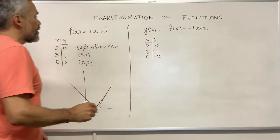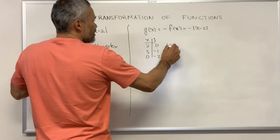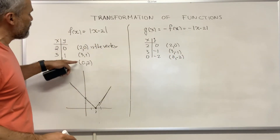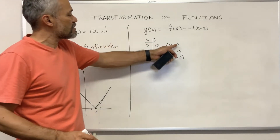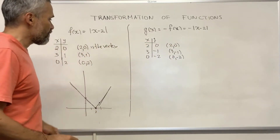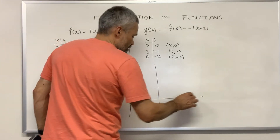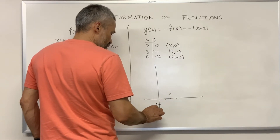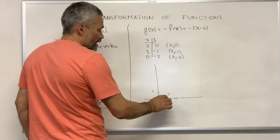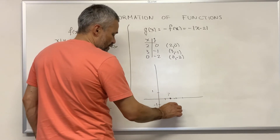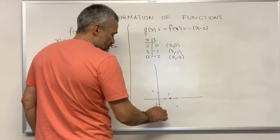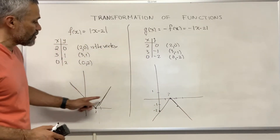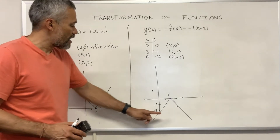When we replace 0 we get negative 2. The points we get — (2, 0), (3, -1), and (0, -2) — are essentially the same as before, with the difference that the second entry has been multiplied by negative 1. Therefore the graph of this function looks like this: we have (2, 0), (3, -1), and (0, -2).